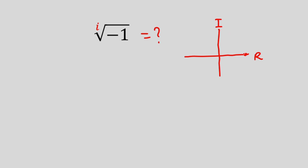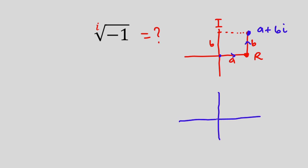Now let's assume that the distance from the origin to this point is a, then the distance from the origin to this point is b. So what it means is that if we have a point here, the distance from this point to this point is also b. So the distance from this point all the way to this point is going to be a plus bi. Likewise, we can represent this on a polar coordinate — if we have our Cartesian plane just like this, the distance from the origin to this point is a, the distance from the origin to this point is b. This will be the real part and this part will be the imaginary part.